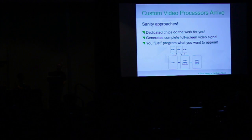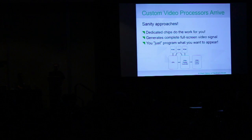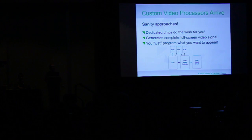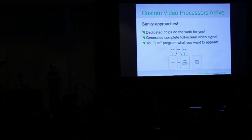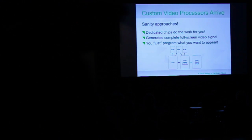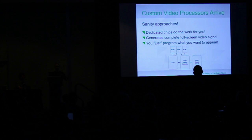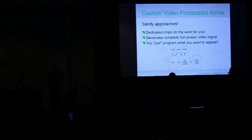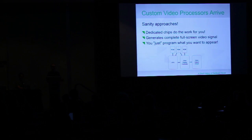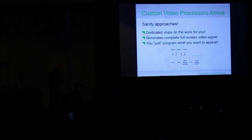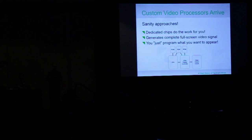Slowly, custom video processors started to arrive, and we started to get a little bit of sanity. These were chips that would actually do a lot of that work for you — they would generate a complete full-screen video signal and you simply had to program what you wanted to appear on the screen. In a generic sense, you'd have your CPU with its own ROM, a video processor that might have its own ROM, and they'd both have some RAM — shared or separate. The CPU could talk directly to the video controller, and the video controller would take care of actually generating the output. The CPU doesn't have to worry about it.